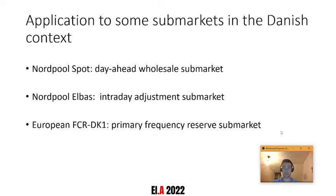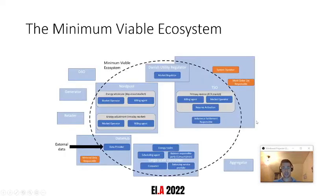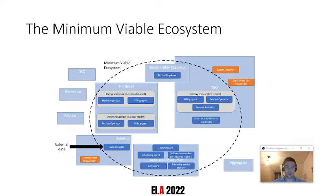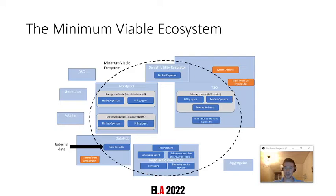The first step in setting up a model is to identify the different roles needed to implement these sub-markets. The sub-markets are represented by grey boxes, the roles by dark blue boxes, and the agents implementing those sub-markets are the light blue squares: the Nordpool agent, implementing both the day-ahead and intraday markets, and the TSO agent — the transmission system operator — which is in charge of the FCR market. Then there's our large-scale consumer, who is both consumer and energy trader, as we assume direct market participation.